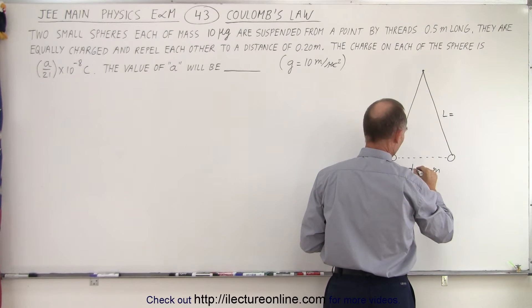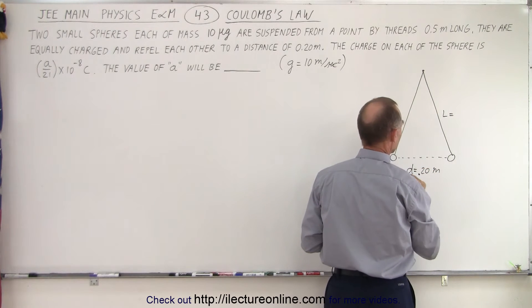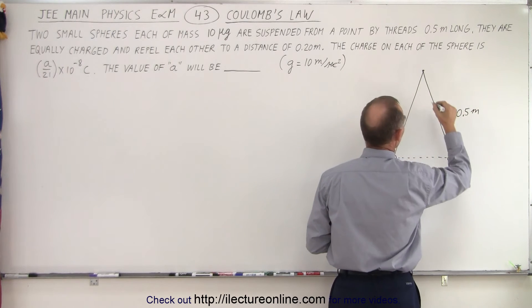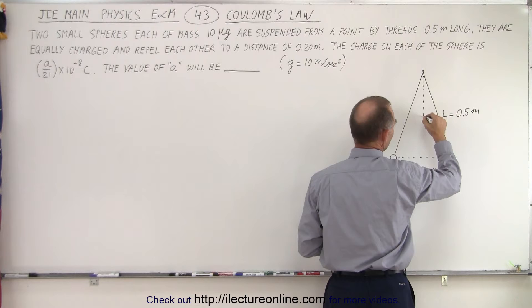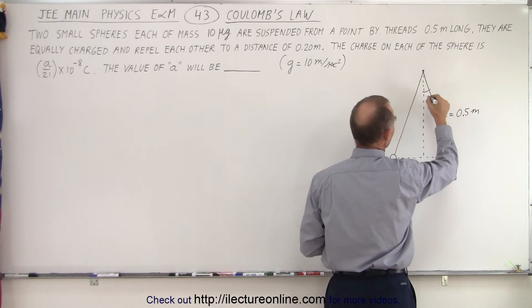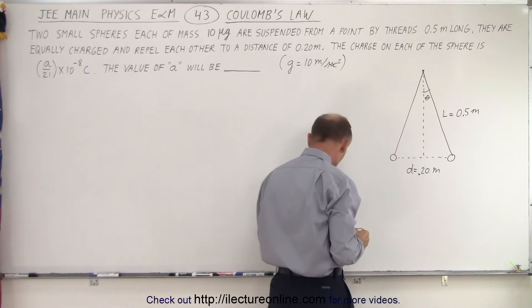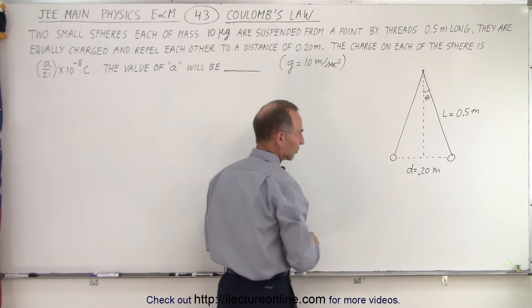We realize that the length here is equal to 0.5 meters. And then if we draw a line straight down, we can then draw an angle here called theta, and so we see a relationship here that we can then use if we're going to set up some vectors.